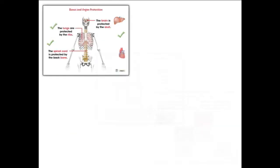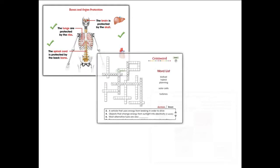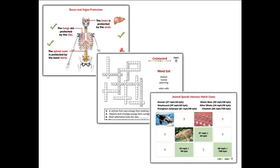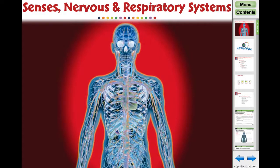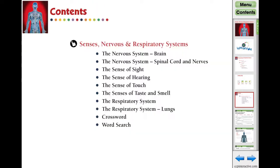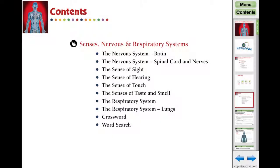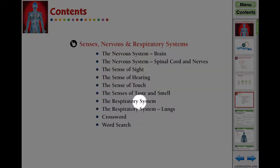Our highly interactive and engaging curriculum-based lesson plans inspire student interaction and are ideal for differentiated learning. Senses, Nervous, and Respiratory Systems is the second of three interactive digital lesson plans in the Human Body series. Our 80-screen-page interactive lesson features comprehensive interactive activities covering topics such as the nervous system, the five senses, and the respiratory system.